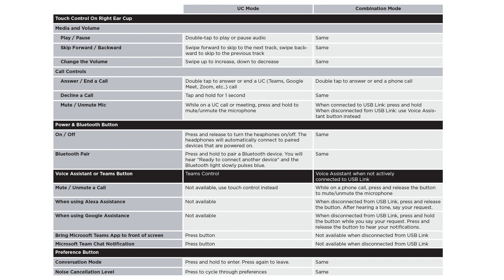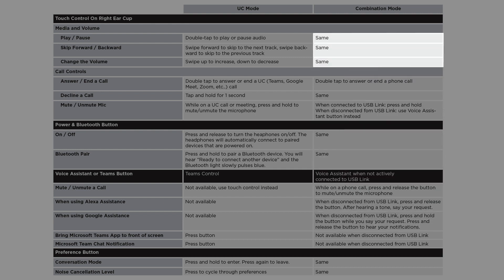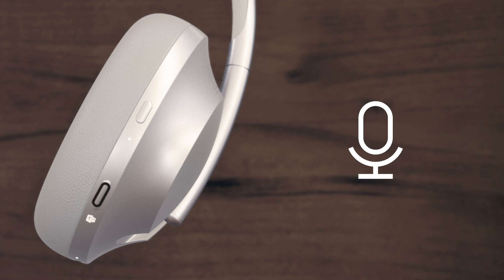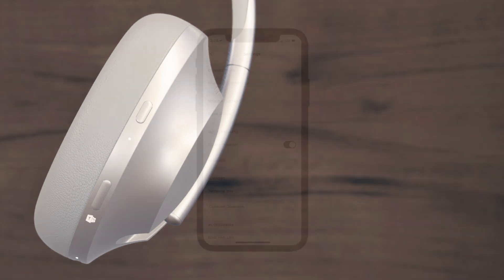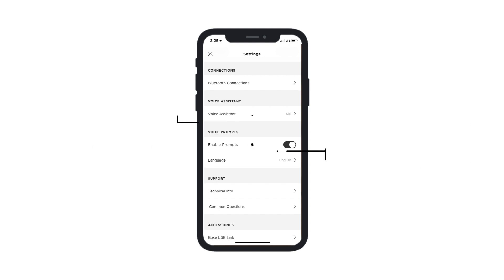When combination mode is enabled and the Bose Headphones 700UC are connected to the USB link, the controls are mapped for UC use with Microsoft Teams. When the USB link is not connected, the controls will operate like our currently best-selling Headphones 700. These changes include the Voice Assistant button, call mute and unmute, and the ability to announce your battery level or enable or disable your voice assistant. The media playback controls do not change when connected to a mobile device in combination mode. To activate your voice assistant, simply press the Teams Voice Assistant button. To mute and unmute your microphone in a call, press the Teams Voice Assistant button while in a call. The final function — to enable and disable the Voice Assistant or announce the battery level — is toggled within the Bose Music app.